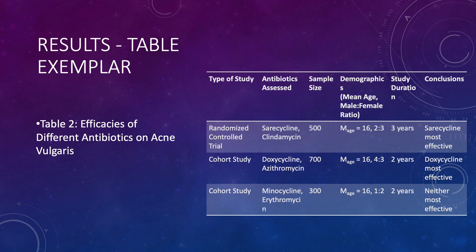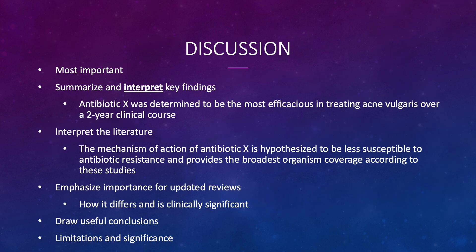This is where your mentor can be particularly helpful, because with more experience reading articles and going to the literature, they're going to know what to look for and say, 'this table really needs to include X, Y, and Z.' The discussion is the most important section — a lot of times people will just read the abstract and then skip straight to the discussion.